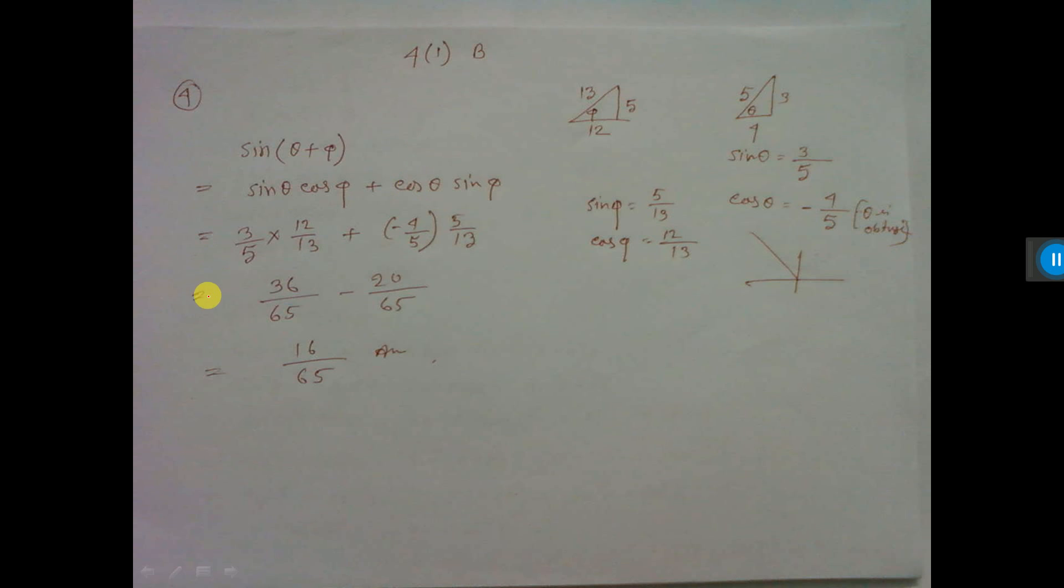Next, you have to find sin(θ + φ). Given sin φ equals 5 by 13 and sin θ equals 3 by 5. One φ angle I am drawing. Sin is perpendicular by hypotenuse, so I am writing here. By Pythagoras theorem you can find base. Similarly here, sin θ is perpendicular by hypotenuse. By Pythagoras theorem you can find base. Now sin(a + b) formula: sin a cos b plus cos a sin b.